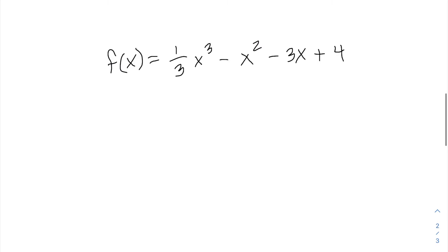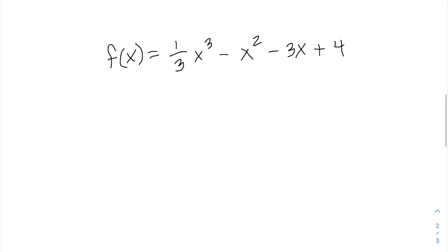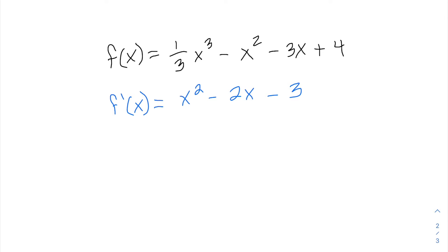Let's start by finding our first and second derivatives because we're going to need them. When you find your first derivative, you multiply by 3 and reduce your exponent by 1, so you get x squared minus 2x minus 3, and the constant becomes 0. That's our first derivative, and our second derivative will be 2x minus 2.